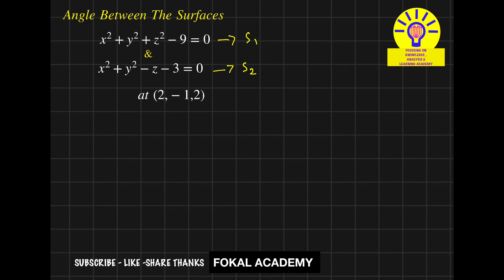So first of all, convert these surface equations into the form of vectors — that is called normal vectors. How to find them? Del S1 gives the normal vector for surface 1, and Del S2 gives the normal vector for surface 2. So first of all, find the normal vector for surface 1.